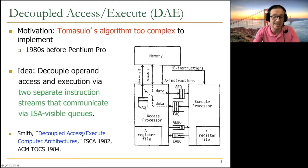And it was introduced by Jim Smith in the seminal paper in ISCA 1982. Its basic principles are applied in computing systems today, but not exactly as it was envisioned. First of all, you can see that ISA needs to change. Communication happens through these queues. These are FIFO queues, they're ISA visible, instructions visible queues.